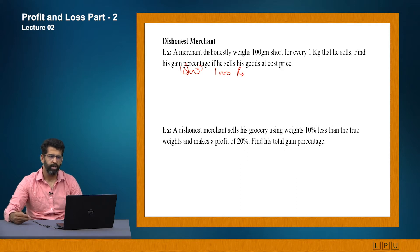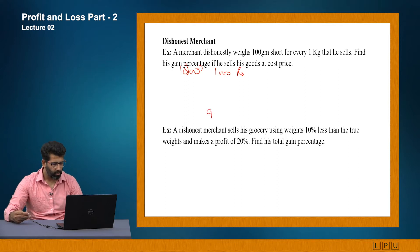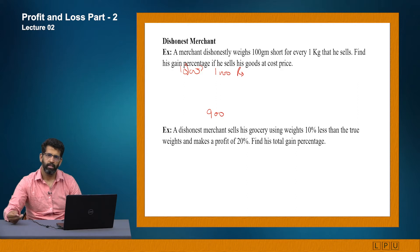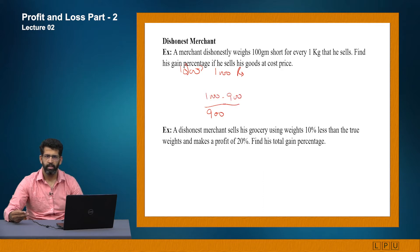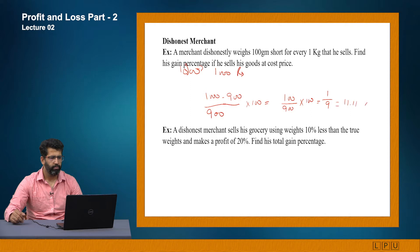The merchant's machine represents he is selling 1 kg of apples, but actually he is selling 100 grams short — that means he is selling only 900 grams. So those 900 grams cost him 900 rupees, whereas he is taking 1000 rupees from the customer. So 1000 minus 900 = 100 profit. Gain % = 100/900 × 100 = 1/9 = 11.11%. That is the answer.